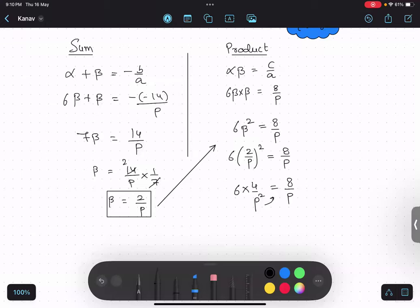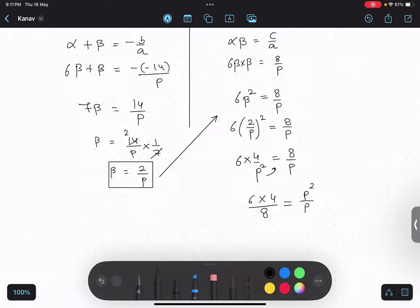Six into four upon eight. P square upon p. So this is one, this is two, this is three. On the left hand side, I am getting three. On the right hand side, p square getting canceled. That will be p. Basically base same power subtract. So p value is coming out to be three.